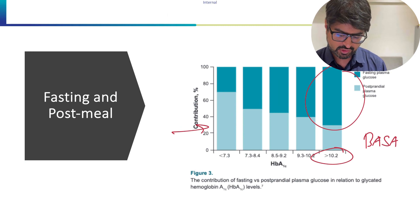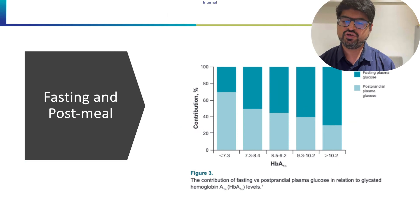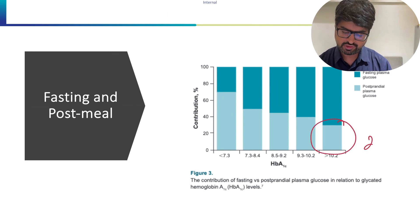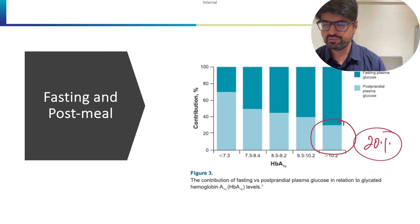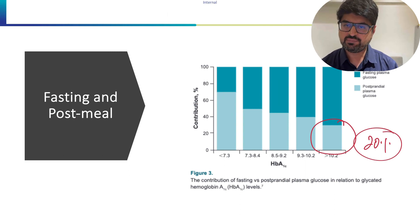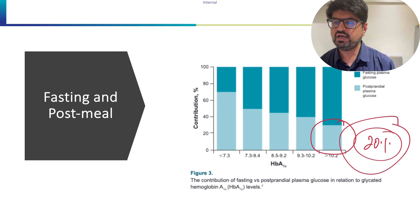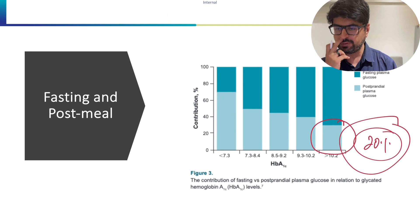When you start a patient on basal insulin and achieve the target fasting blood sugar, in most cases you can achieve the target HbA1c. However, there is still approximately a 20% contribution from post-meal sugar, so some residual hyperglycemia remains and may need an additional push to bring HbA1c fully to target.